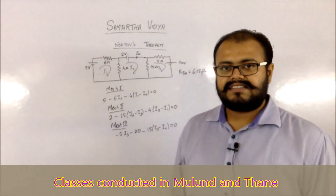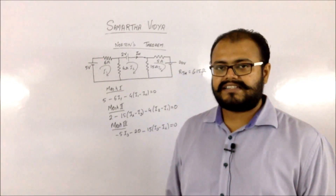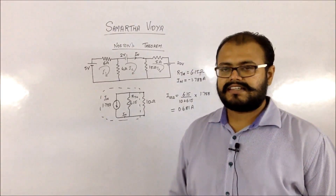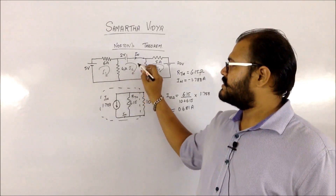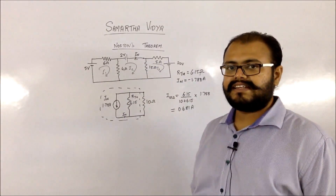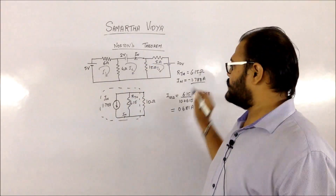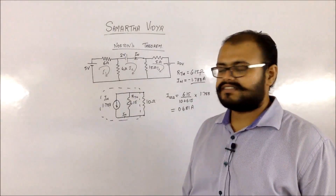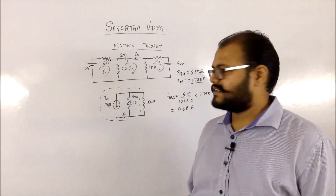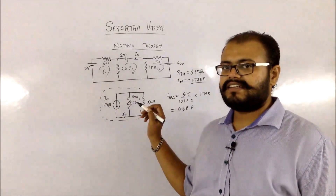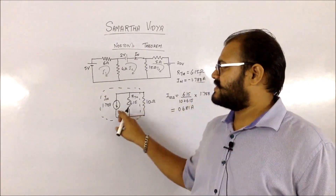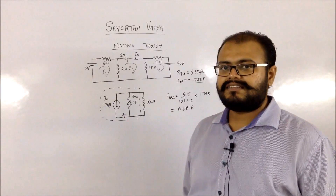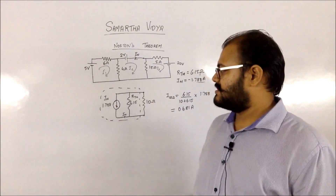Solving these three equations simultaneously gives you the values of I1, I2, and I3. You need to find Norton's current IN. Since I2 is flowing through the loop where IN is present in that branch, IN equals I2, and your I2 is minus 1.788 amperes. Next, you replace your circuit with the Norton's equivalent circuit, which has a current source of 1.788 amperes. Since the answer is negative, the current direction is reversed to show the opposite direction.